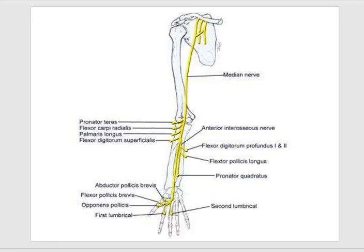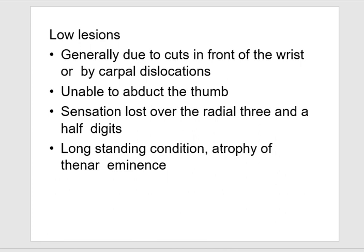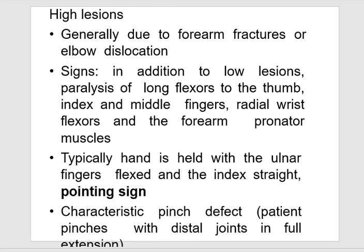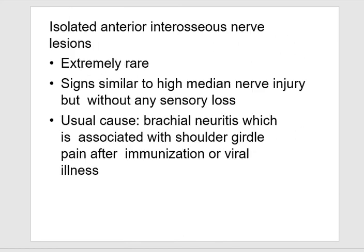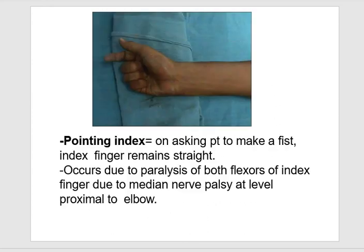The median nerve course is shown along with its motor branches in the forearm, distal one third, and hand. In high lesions, the hand is held with ulnar fingers flexed and the index finger straight — this is the pointing sign — along with a characteristic pinch defect where the patient pinches with distal joints in full extension. Check for flexor pollicis longus and flexor digitorum superficialis. The pointing test: when asked to make a fist, the index finger remains straight, due to paralysis of both flexors of the index finger from median nerve palsy at or proximal to the elbow.